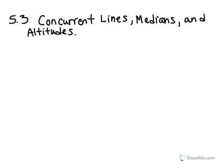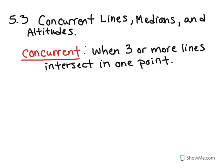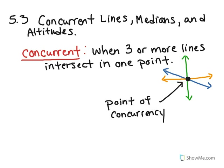In this tutorial we're going to talk about section 5.3: concurrent lines, medians, and altitudes. Let's get some vocabulary terms out of the way first. The first vocabulary word is concurrence, and this is when three or more lines intersect in one point, just like in this picture. Now the point where they intersect has a specific name, and that is called the point of concurrency.